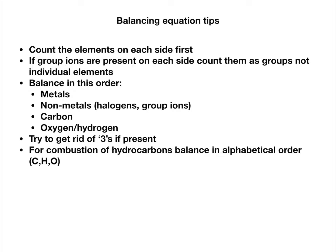Here are some basic balancing equation tips. First of all, always count how many of each element you have on each side of the arrow first. If you have group ions and they are present on each side of the arrow without changing, then count them as groups rather than individual elements.